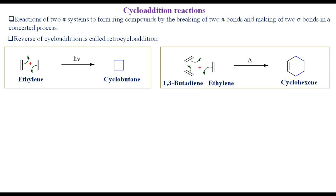During cycloaddition reactions of two ethylene molecules, two pi bonds are consumed. In replacement, two sigma bonds in the product cyclobutane are formed. Similarly, during the cycloaddition reaction of 1,3-butadiene and ethylene, two pi bonds of the reactants — one from each — are consumed to form two sigma bonds in the product.